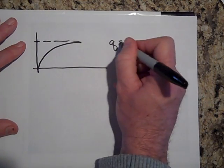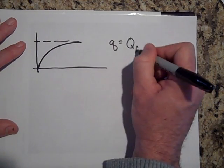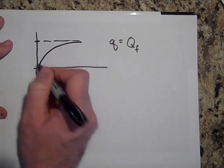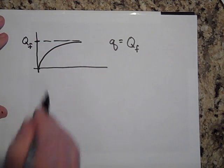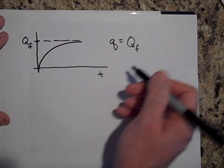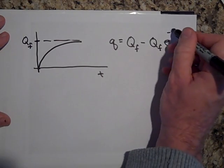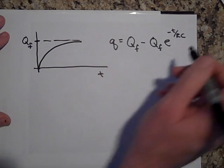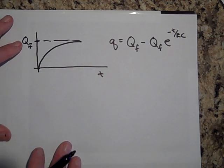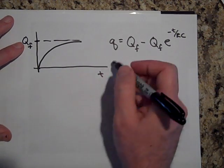Well, this equation is going to be Q final, not Q naught, because Q naught is 0, but Q final, minus Q final E to the negative T over RC. We derived that in a previous video.